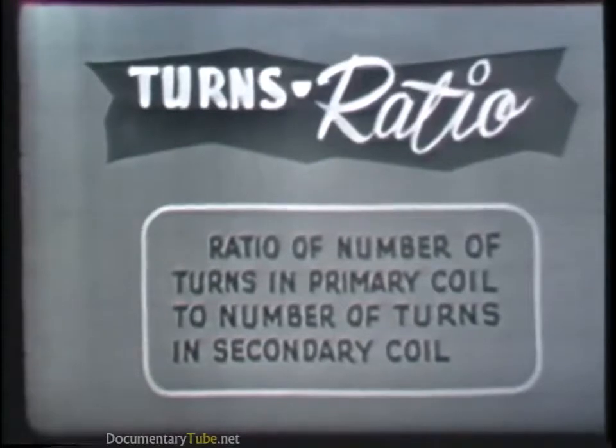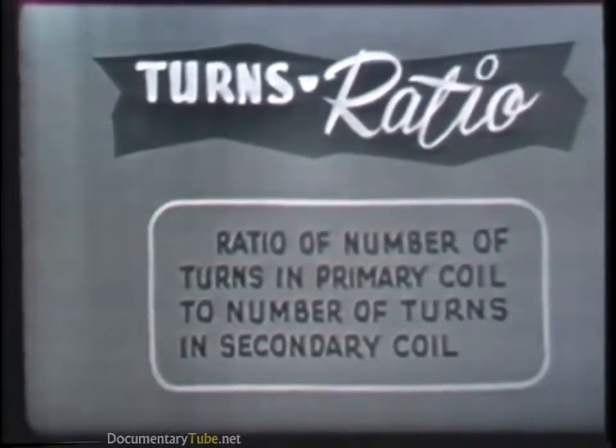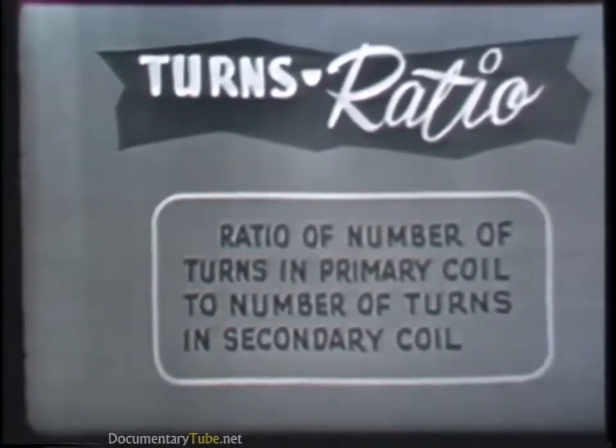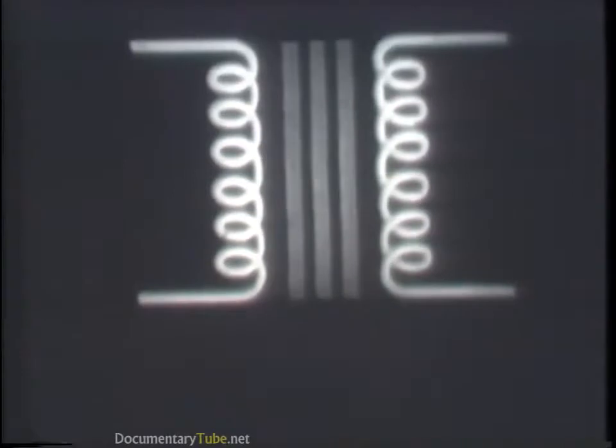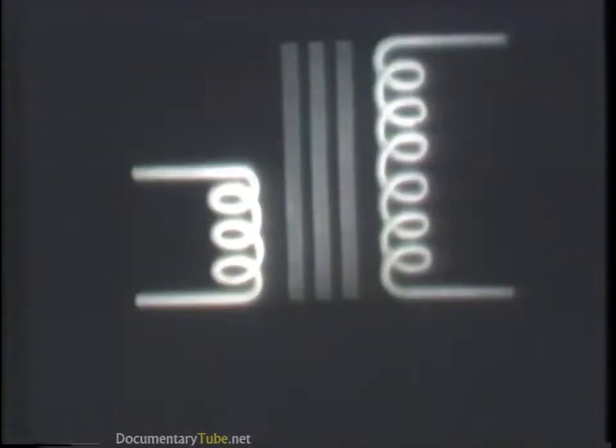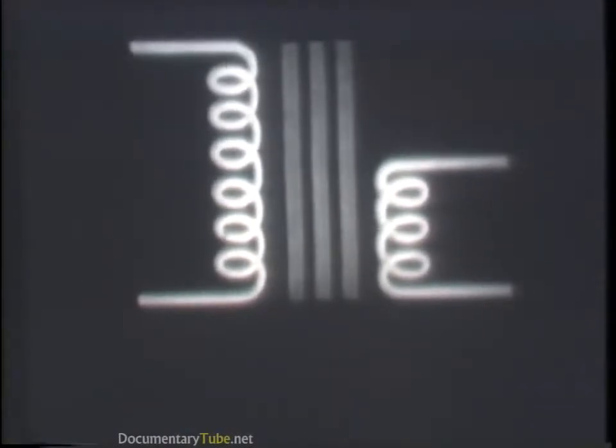The transformer can step a voltage up or it can step it down. The voltage increase or decrease is determined by the turns ratio of the particular transformer. The turns ratio is the ratio of the number of turns in the primary coil to the number of turns in the secondary coil. For example, if the primary coil has 500 turns and the secondary 1,000 turns — twice the number of the primary, or a ratio of 1 to 2 — the voltage doubles. The voltage is stepped up because the secondary coil is the largest. If the secondary is the smallest, the voltage is stepped down. Either way, voltage is transformed.